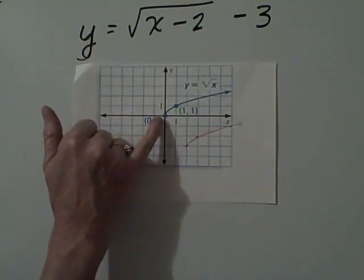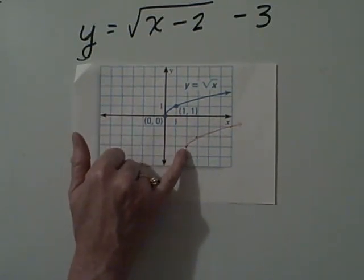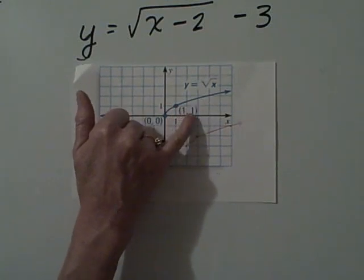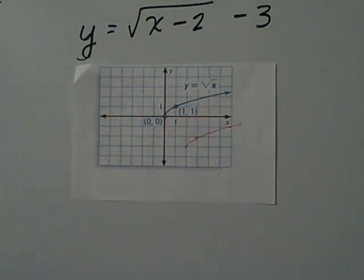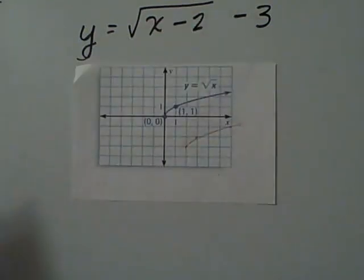Here was our original point. It shifted over two units and down one, two, three units. This point shifted over two units and down one, two, three units. All this is doing is causing shifts just as it did in our absolute value. So it's nothing new.